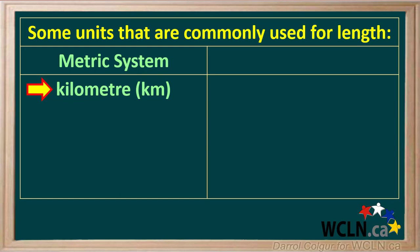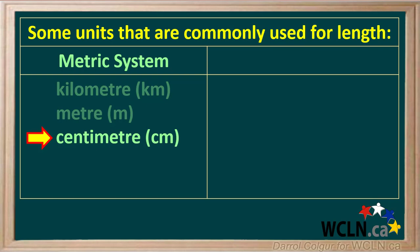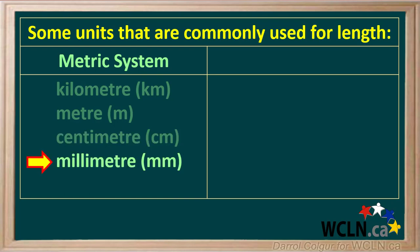The unit we use for long lengths is the kilometer. The base unit for length in the metric system is the meter. One kilometer is one thousand meters. A smaller unit is a centimeter, which is one hundredth of a meter. An even smaller unit is a millimeter, which is one one-thousandth of a meter, or one tenth of a centimeter.